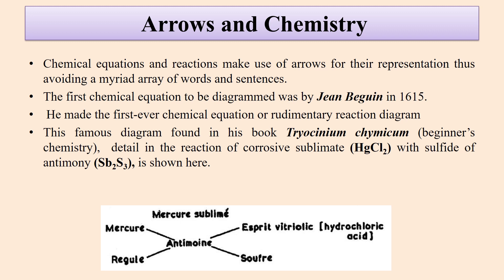The first chemical equation to be diagrammed was by Jean Beguin in 1615. He made the first-ever chemical equation — a rudimentary reaction diagram. This famous diagram found in his book Triocinium Chemicium, i.e. beginner's chemistry, detailed the reaction of Corrosive sublimate HgCl2 with sulphide of antimony, i.e. antimony sulphide, as shown here.